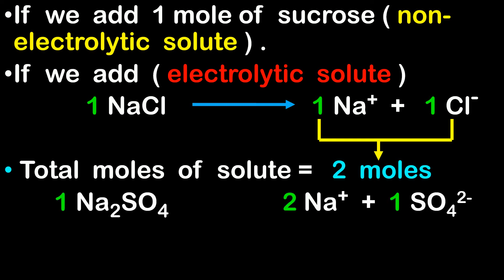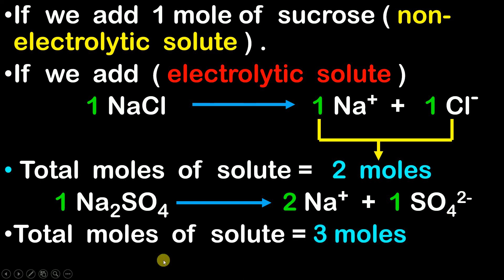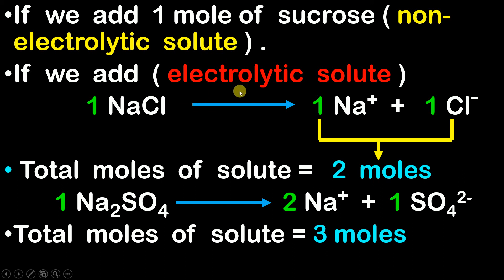The similar thing happens when we add Na₂SO₄, which is also an electrolytic solute. When we add 1 mol of Na₂SO₄, we get 2 moles of Na⁺ and 1 mol of SO₄²⁻. So as you can see, initially we added only 1 mol of Na₂SO₄ but now the total number of moles of solute will be equal to 3 — this 2 plus 1 gives you 3. This is the difference between a non-electrolytic solute and an electrolytic solute: when you add a non-electrolytic solute, the number of moles will remain constant, but when we add an electrolytic solute, the number of moles will increase.